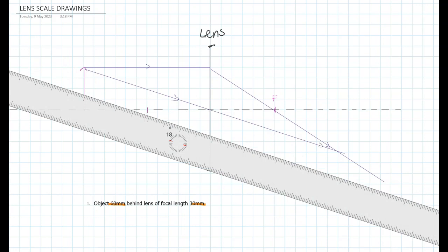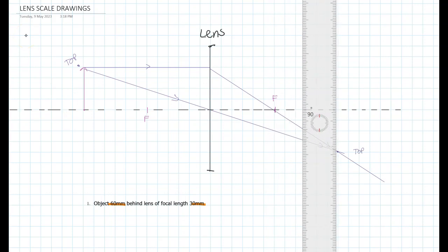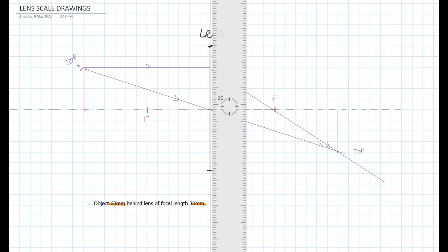Now these two rays have come from the top of the arrowhead and they emerge and they meet together here at the top of the arrowhead. So putting on a ruler at 90 degrees to the axis and putting it on here we draw a line from the principal axis to that point there and that is our image.